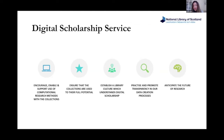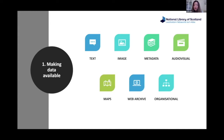The fifth objective is around anticipating the future of research — slightly ambitious — but we want to make sure our collections stand the test of time and remain usable and relevant even if technologies or methodologies change. There are three main areas of work: the first is making data available. The main focus has been on text and images because of our mass digitisation program, but we're also doing a lot of work around metadata and hoping to release our catalogue soon.